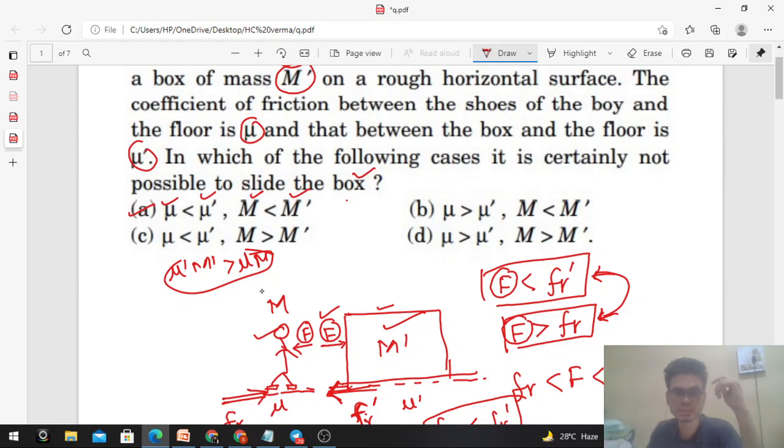And for the other cases, we cannot say anything. Maybe μ' is bigger, but M' is lesser, so we cannot comment about M' into μ'. But we need this condition. So you can check the other options. Only option one is correct.